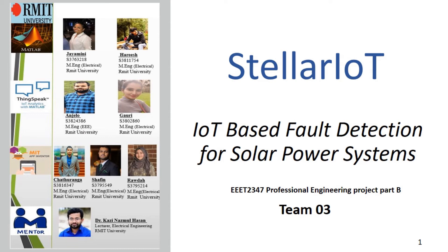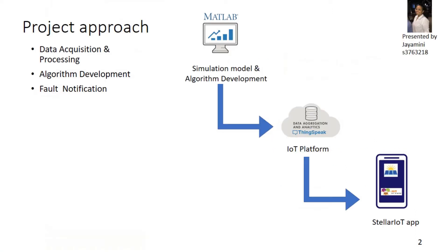We are team 3. Our product is Stellar IoT, an IoT-based fault detection system for solar power systems. Our project has three steps: acquisition of solar irradiance data, algorithm development for fault detection, and remote fault notification.